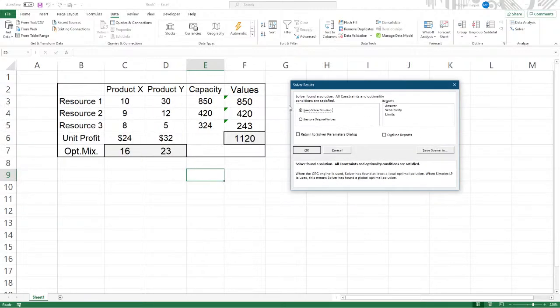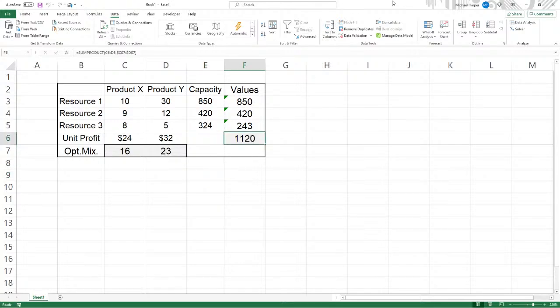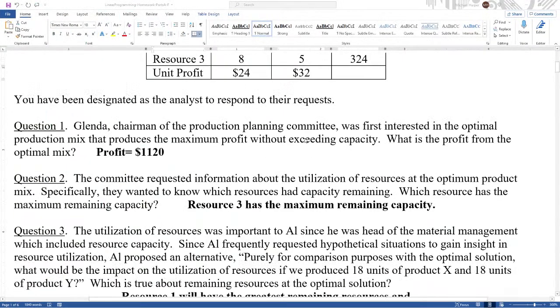Well, the constraints simply are these values here are less than or equal to the capacity. Non-negativity constraints to make this a simplex algorithm. And then say solve. And it says that solver found a solution. And there it is. Let's say okay. 1120, then, is going to be the answer to question number one. So we're on our way.